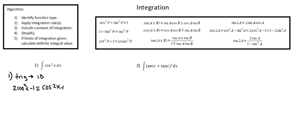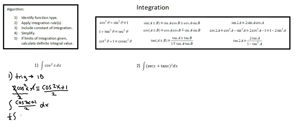We'll begin by adding 1 to both sides — that will eliminate the minus 1 on the left — then dividing by 2. We have cos²x on the left as an identity with (cos 2x + 1)/2. So now our integral is the integral of (cos 2x + 1)/2 with respect to x. I'll bring the multiple of 1/2 outside of the integral, so we're going to integrate 1/2 times (cos 2x + 1) with respect to x.